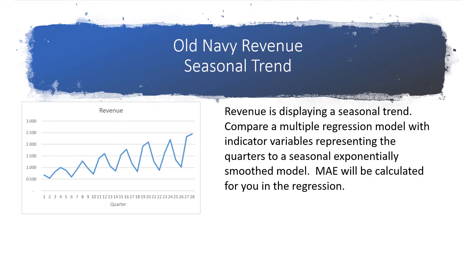Now let's look at Old Navy's revenue data. Here we see a reoccurring pattern of even waves, which indicates a seasonal trend. Quarter 4 seems to be the high every year — at quarters 4, 8, 12, and 16, those are the peaks. So let's work through two different types of seasonal models.